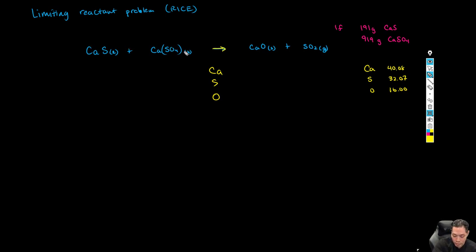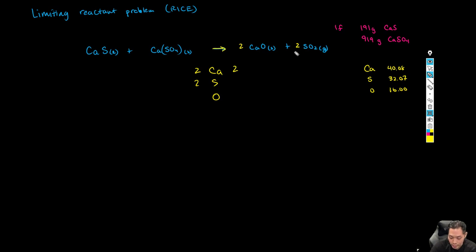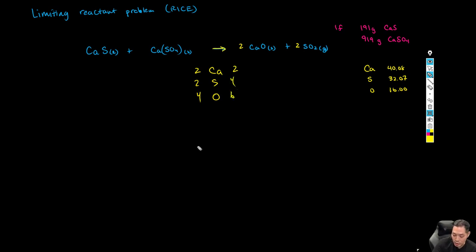First attempt: we have one, two calciums on the left, so we put a two on the right. Then we have two sulfurs on the left and one on the right, so we put a two there. Counting oxygens: we have four on one side and six on the other — not equal — so we need to try again.